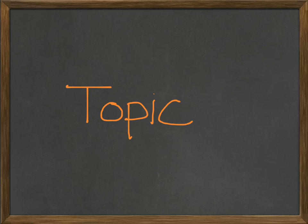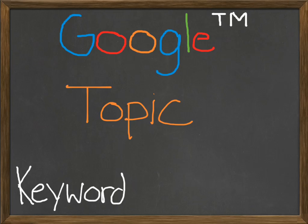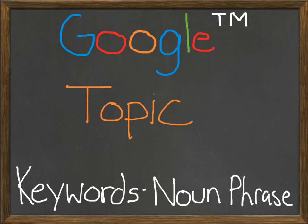Think about how your reader found your paper. Imagine they go to Google. What keywords would they input to get a list that includes your paper? They're probably going to type in a noun phrase, so your answer doesn't need to be a full sentence. Whatever you come up with is your topic.